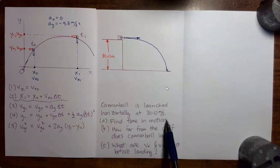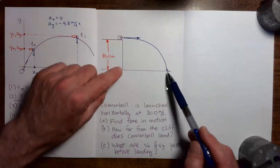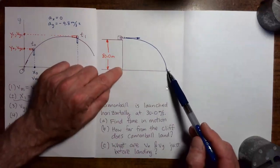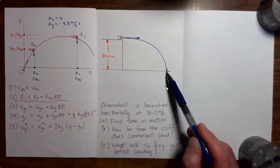We would like to find the total time in motion for the cannonball. We would like to find how far from the base of the cliff does the cannonball land, and what are the x and y components of the velocity just before landing.